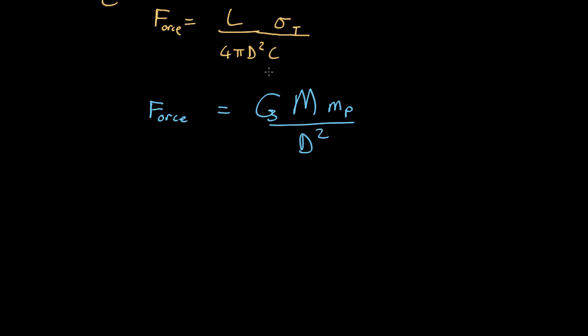Now we can set these two equal to each other and we can rearrange to find what the luminosity is that's needed to blow things off. The first thing to notice is that both terms have a d-squared, one over d-squared in them. What this means is distance doesn't matter.